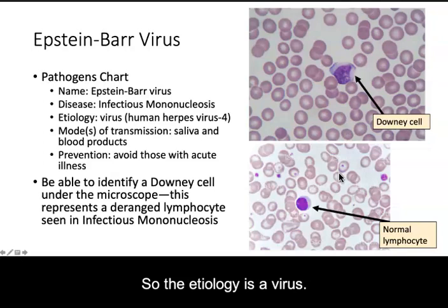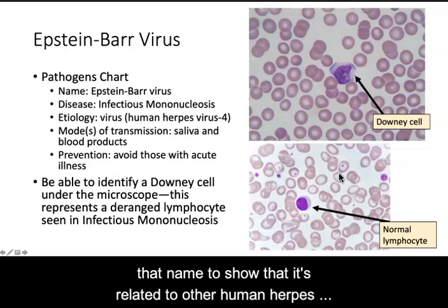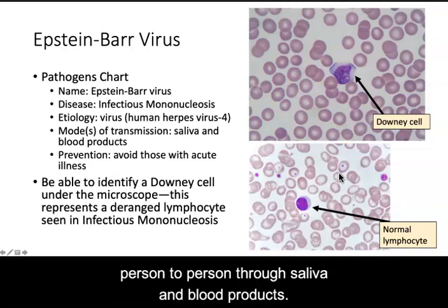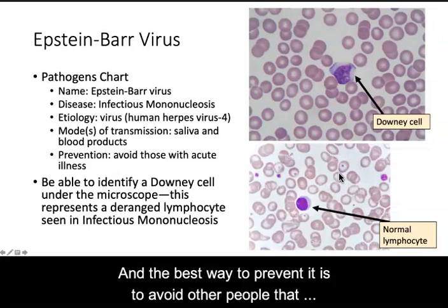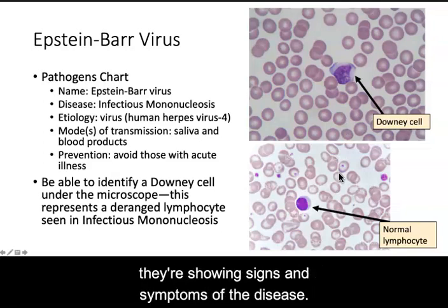The thing that actually causes infectious mononucleosis is the Epstein-Barr virus, so the etiology is a virus. It's also known as the human herpes virus 4, and we use that name to show that it's related to other human herpes viruses — so either name is correct. It's transmitted from person to person through saliva and blood products, and the best way to prevent it is to avoid other people that are acutely sick with it — meaning they're showing signs and symptoms of the disease.